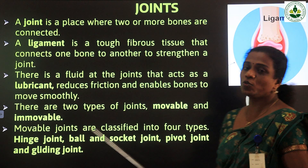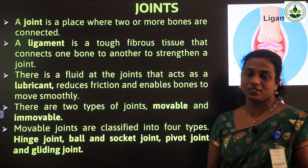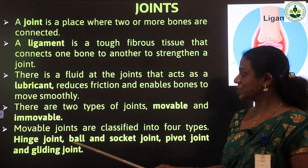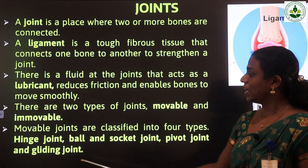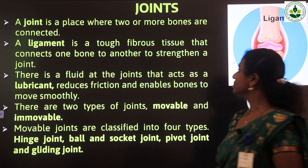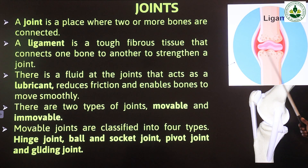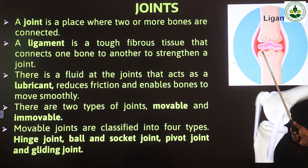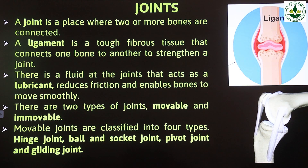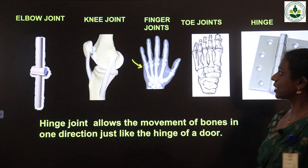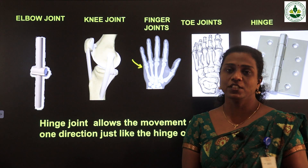Movable joints are classified into four types: first, hinge joint; second, ball and socket; third, pivot; and fourth, gliding joint. Before going to that, we can see the picture of a ligament. The ligament connects the bones together and also strengthens the joint.